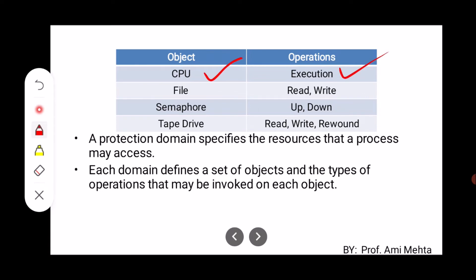The operations that are possible depend on the object. For example: the object is CPU — the operation is execution; the object is a file — the operations are read and write; the object is a semaphore — the operations are up and down; the object is a tape drive — the operations we can perform are read, write, and rewind.